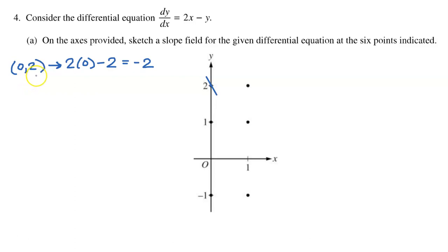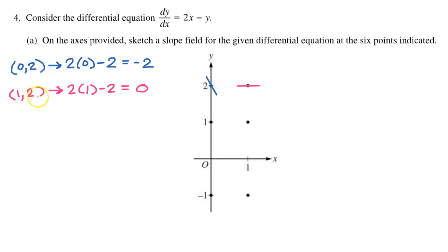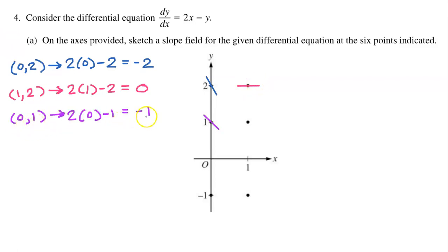At the first point, the slope is negative 2, so we should see a decreasing slope that is steeper than a 45-degree angle. At the next point, the slope is 0, so you should draw a horizontal segment. At the third point, the slope is negative 1, so we should see a slope that is decreasing at a 45-degree angle.